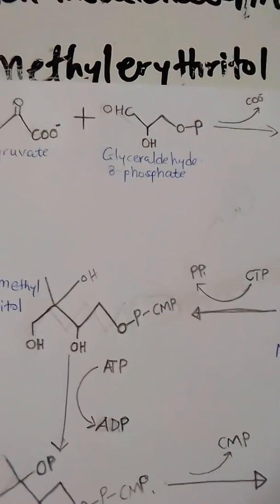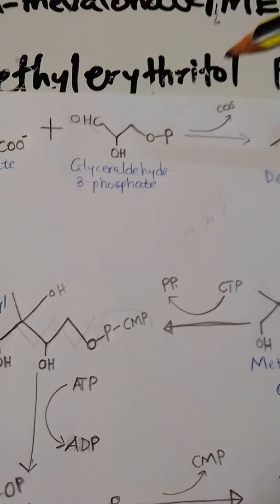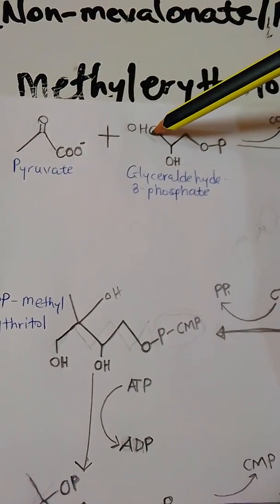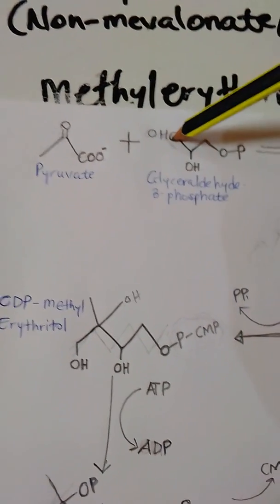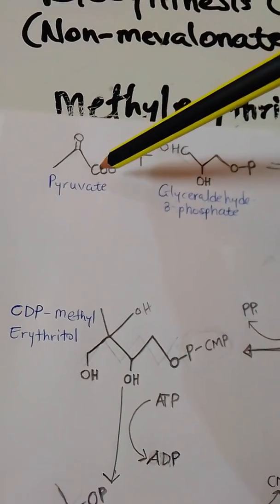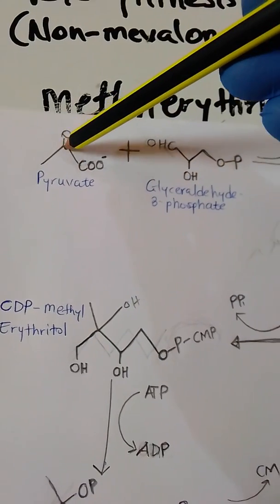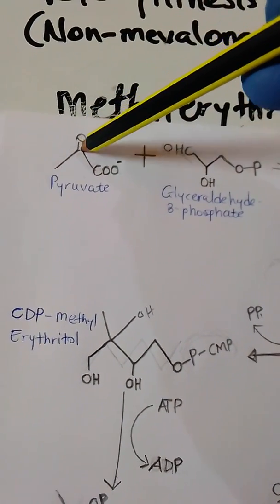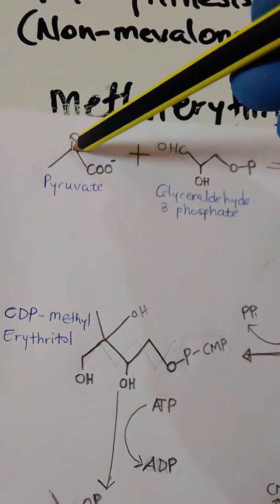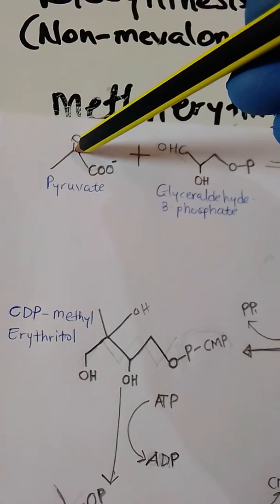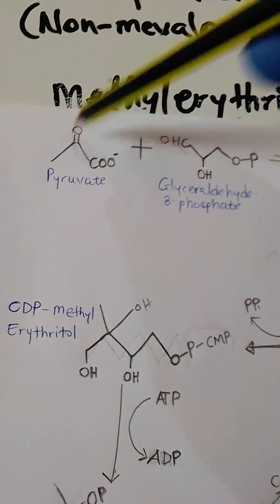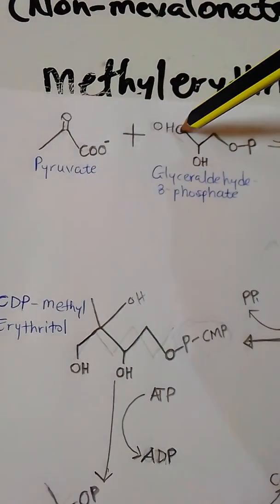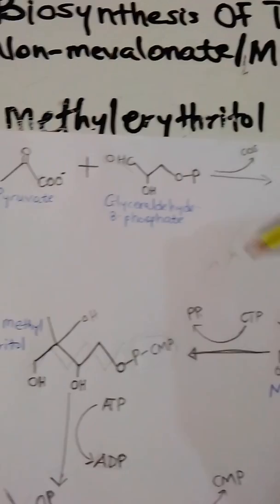In this step there is a loss of carbon dioxide, and the aldehyde carbon displaces the carboxylate group of the pyruvate, so that the bond is initiated between the carbon of the pyruvate and the aldehyde carbon of the other molecule.